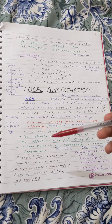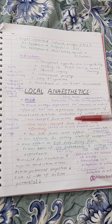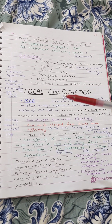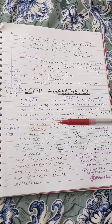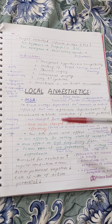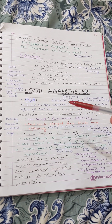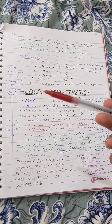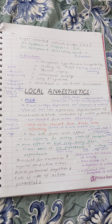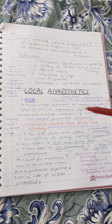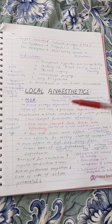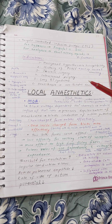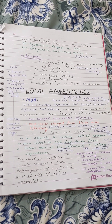Both forms — ionized as well as un-ionized — cause effects. That is why in tissues where pH is reduced, like in infectious or inflamed tissues, local anesthetic action is impaired because the drug exists mostly in the ionized form and cannot penetrate into the cells.